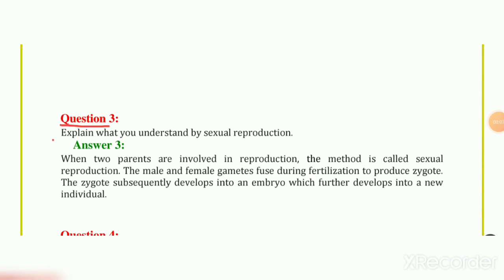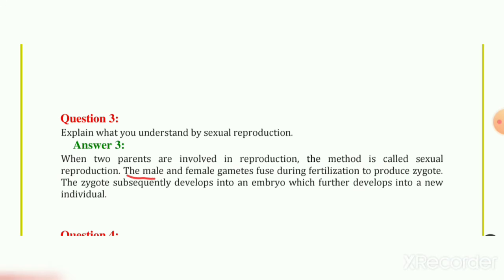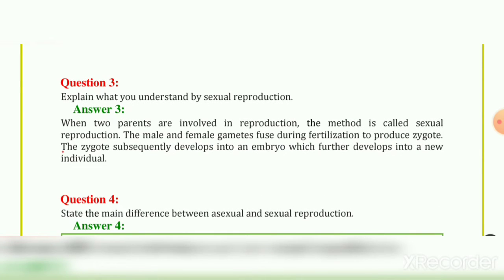Question 3: Explain what you understand by sexual reproduction. When two parents are involved in reproduction, the process is called sexual reproduction. The male and female gametes fuse during fertilization to produce a zygote. The zygote subsequently develops into an embryo, which further develops into a new individual.